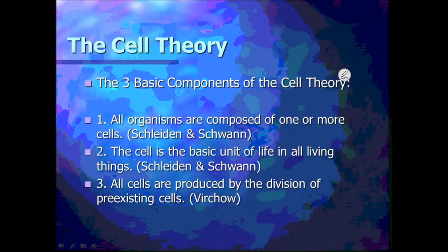Those are the three parts of the cell theory. Part one: all living things are made up of cells — Schleiden and Schwann contributed to this because they took samples from plants and animals, put them under microscopes, and concluded all living things have cells. Part two: cells are the basic unit of life, as shown in that chart. Part three: Virchow said all cells come from pre-existing cells.